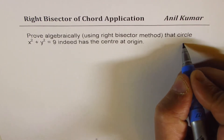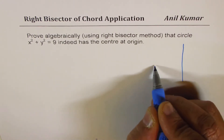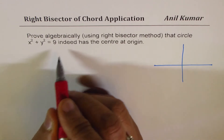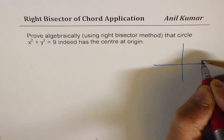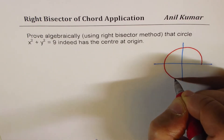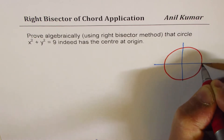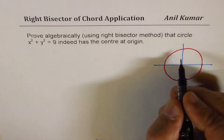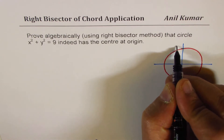You can always pause the video, answer the question, and then look into my suggestions. Let me sketch the circle. We have this circle x² + y² = 9. The x and y intercepts for the circle are going to be plus or minus 3.